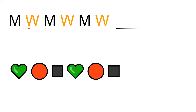We have M, then W, then black M, orange W, again black M and orange W. So is this a pattern? Yes it is. Why? Because M and W are repeating again and again.